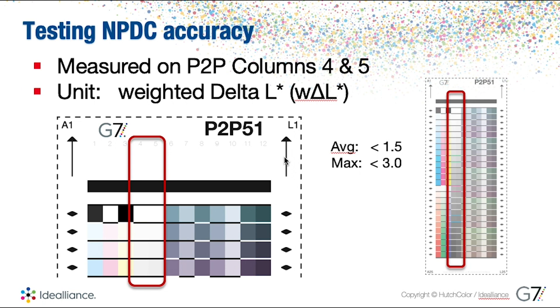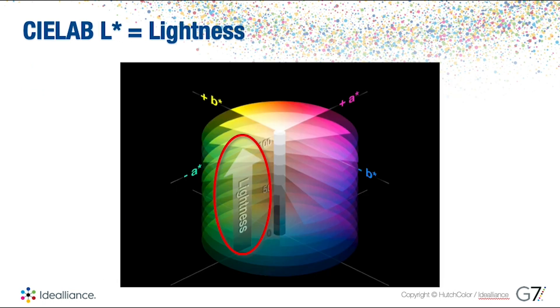For those that may not be familiar with delta L star or L star in general, L star is part of the CIELAB color space and it defines lightness—zero being the darkest dark and then 100 being the lightest light or the whitest white. So there you have it: it defines lightness. That's why we use it to define how dark or how light that ramp is and whether or not it is accurate to the neutral print density curve that we're aiming for.